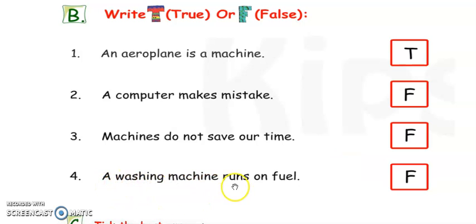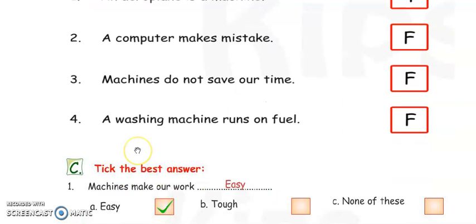Next, number 4. Washing machine runs on fuel. No. Washing machine runs on electricity. This is also wrong. And for False, you have to write F. This is for Exercise B. Now, next.